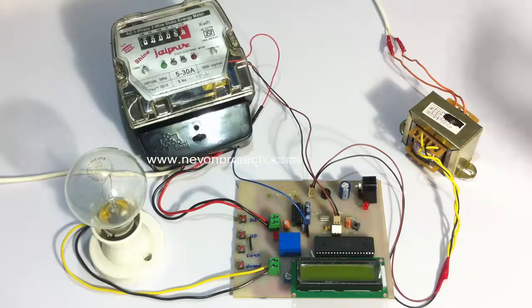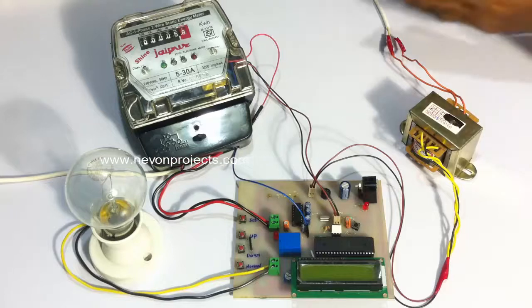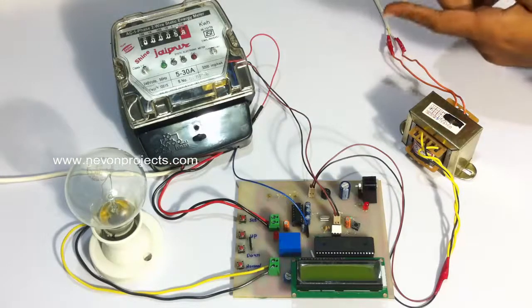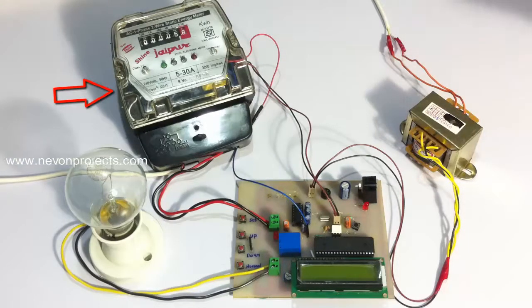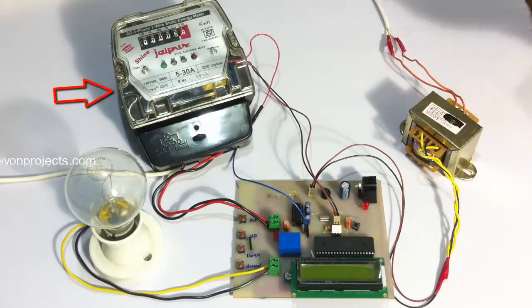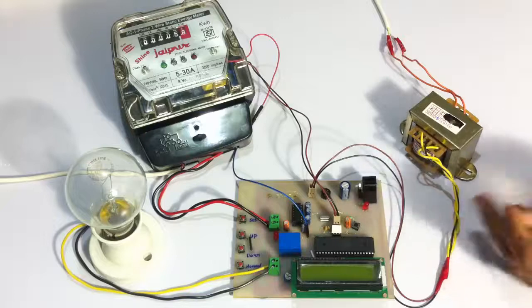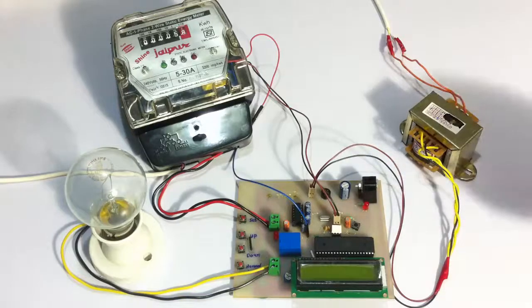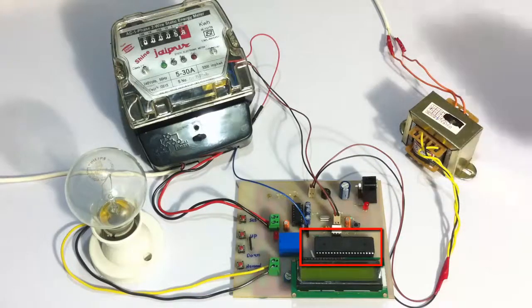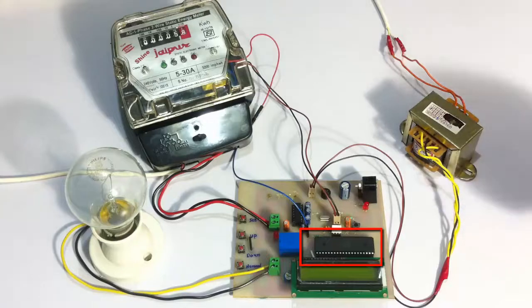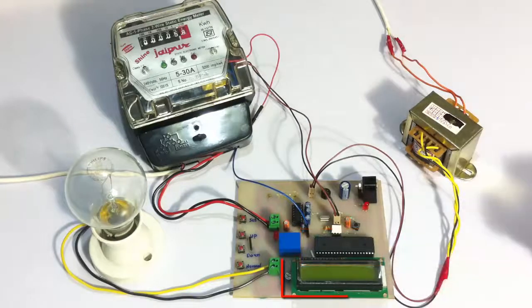This project does this with the help of an energy meter. This energy meter gives 3200 impulses per kilowatt hour through the optocoupler to the microcontroller. The microcontroller is the 8051 family microcontroller and the information is displayed with the help of the LCD.